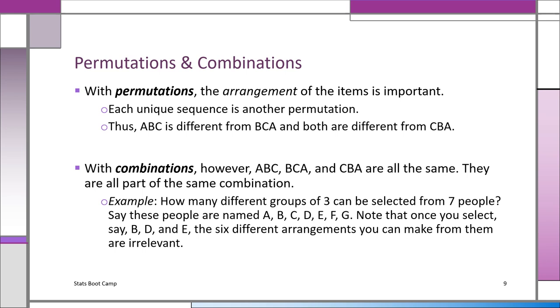So let's see how this works. For example, if I ask you how many different groups of three can be selected from seven people? Let's call the people A, B, C, D, E, F, G. There are seven people. And now once you select B, D, and E, the fact that they can be arranged six different ways, B, D, E, E, D, B, B, E, D, it doesn't matter. It's all irrelevant. It's the same three. So obviously you can get a smaller number. So that's the difference between a permutation and a combination.